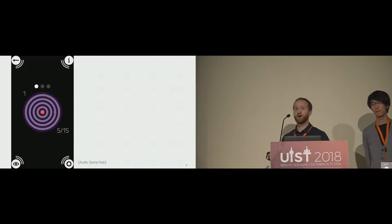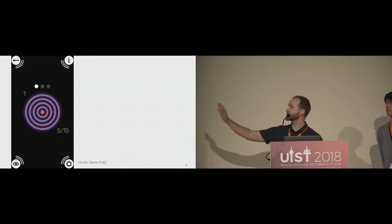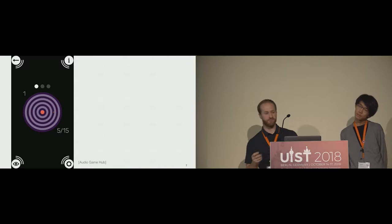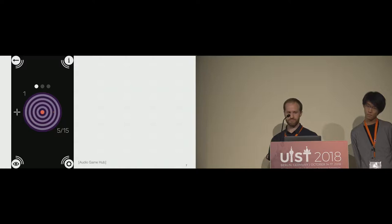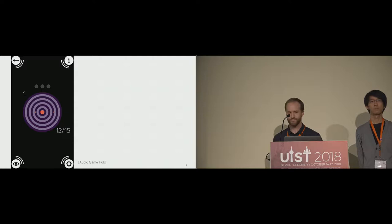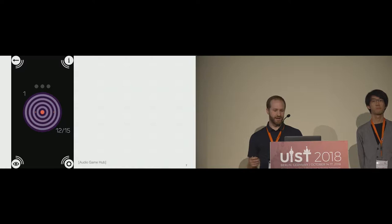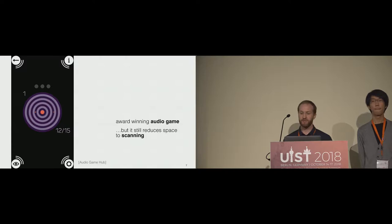Current displays for blind users for video games might look something more like this. This is an audio game that might run on your smartphone. A little cursor is going to start sliding across, and the volume will get louder as it approaches the bullseye. You tap on the screen to be able to shoot. This is actually an award-winning audio game — probably pretty good for what's out there.